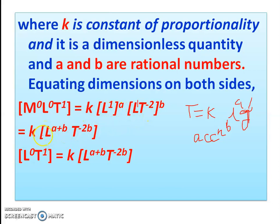Since k is dimensionless, the right-hand side becomes L raised to a times (L¹T⁻²) raised to b. Expanding this, L contributes L^a, and g^b contributes L^b and T^(−2b). So the right-hand side is L^(a+b) times T^(−2b).